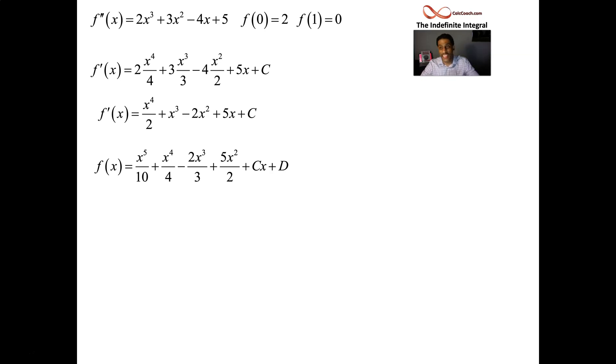It was x to the 5 over 5. There was already 2 down there. So that's how it became x to the 5 over 10.